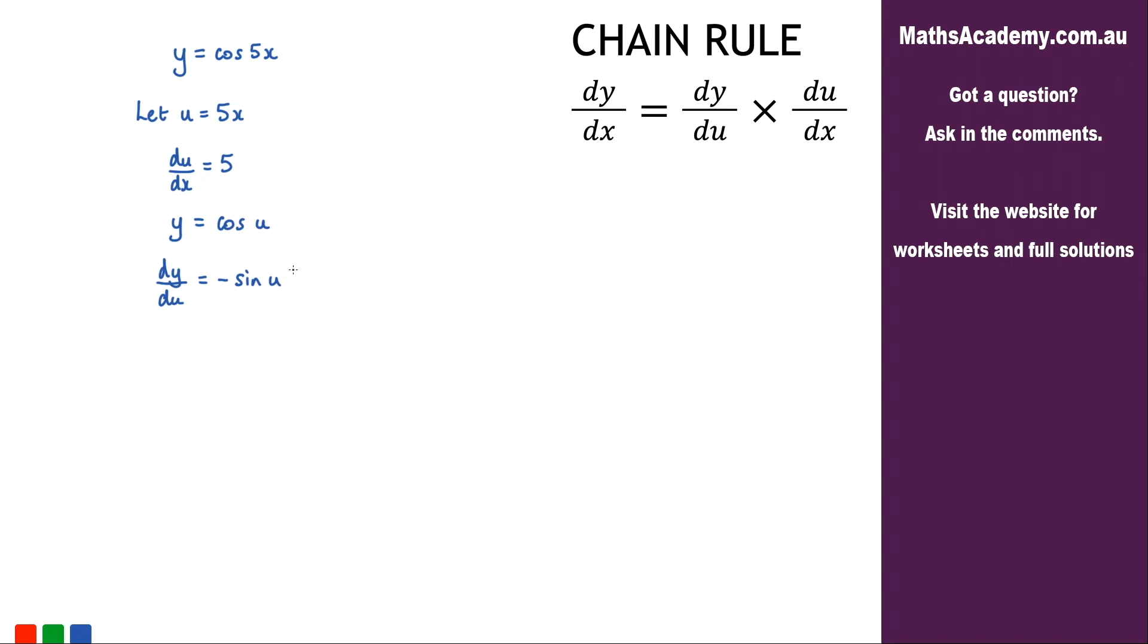Now I can apply the chain rule. So dy by dx is equal to dy by du multiplied by du by dx. Now dy by du, that is negative sine u.